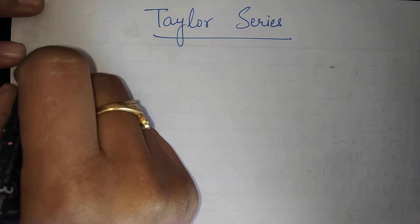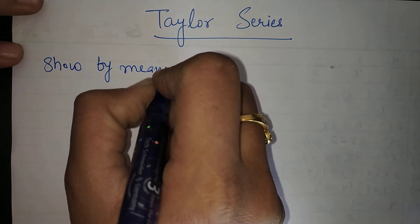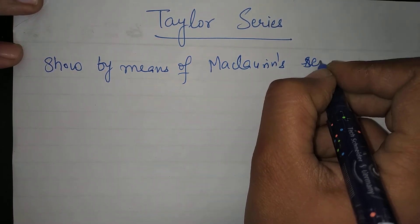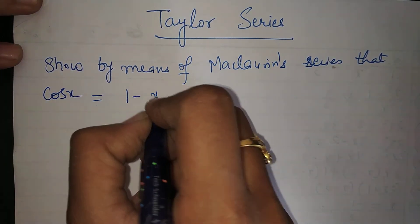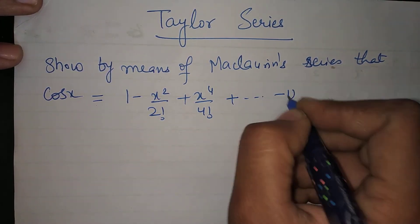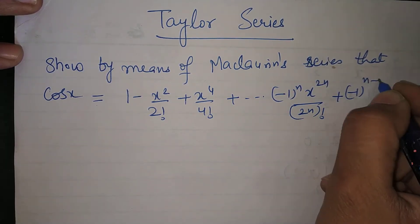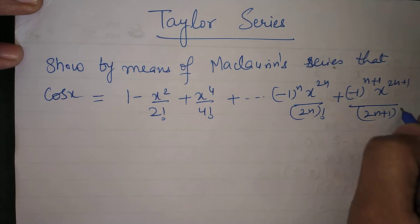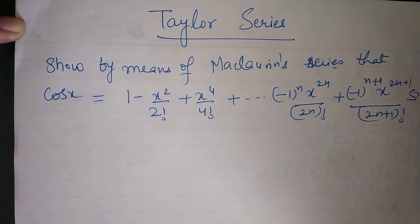It says: show that by means of Maclaurin series that cos x is equal to 1 minus x squared by 2 factorial plus x to the 4 by 4 factorial, plus (-1)^n x^(2n) upon 2n factorial, plus (-1)^(n+1) x^(2n+1) upon (2n+1) factorial times sin(θx). By Maclaurin series, we have to prove this.